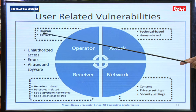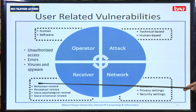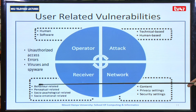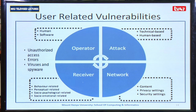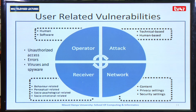From the originating person right through the network, the receiver ends up receiving corrupted information. For the attack to be completed, the receiver is targeted by the attacker based on four areas: behavior-related — how well trained is the employee; perceptual-related; socio-psychological-related; and socio-emotional-related. Every time an attacker wants to do a social engineering attack, they maximize on these concepts to penetrate the system using an employee or a third party.